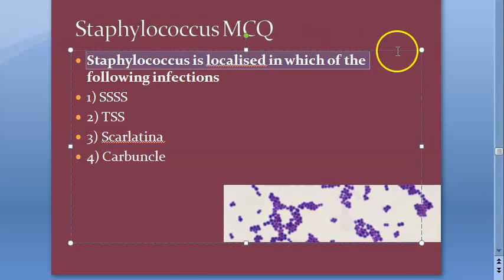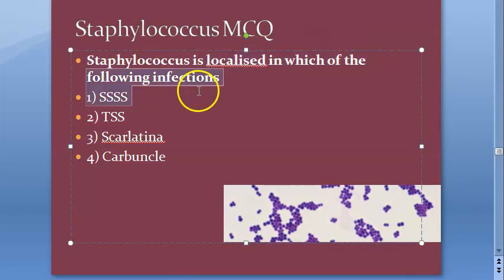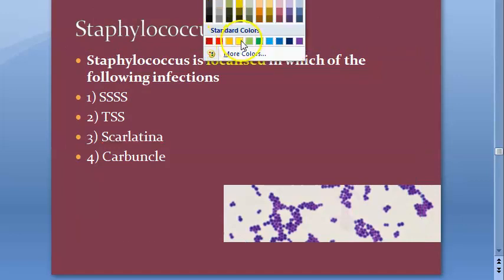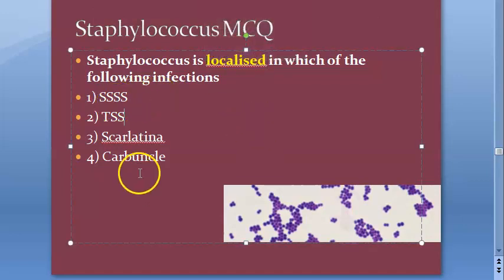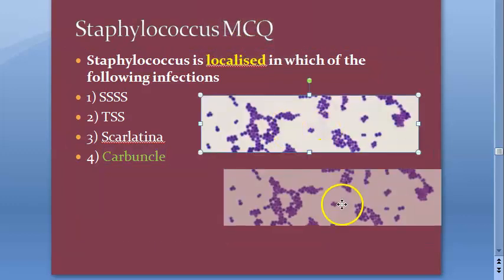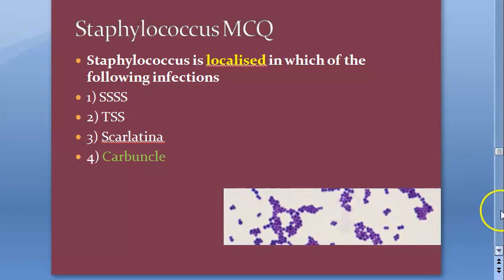Staphylococcus is localized in which of the following infections? It is localized — the answer is carbuncle. Not very sure because the answer key is not available, but I think it's carbuncle.